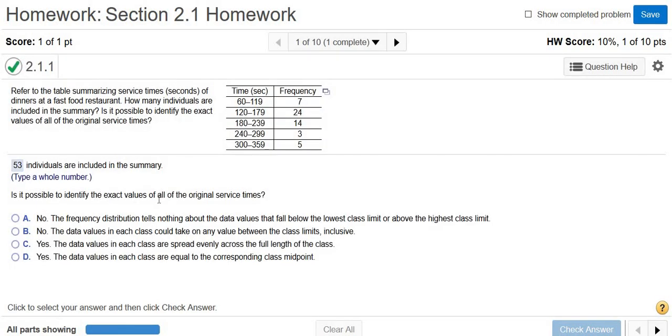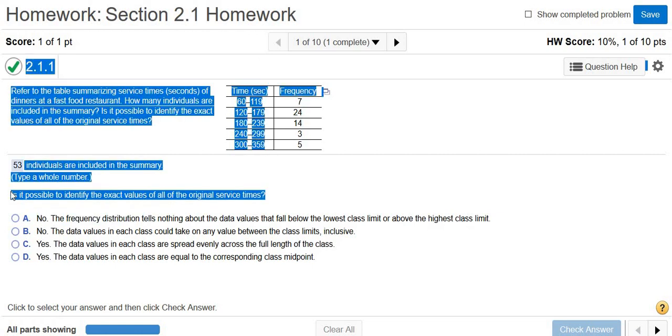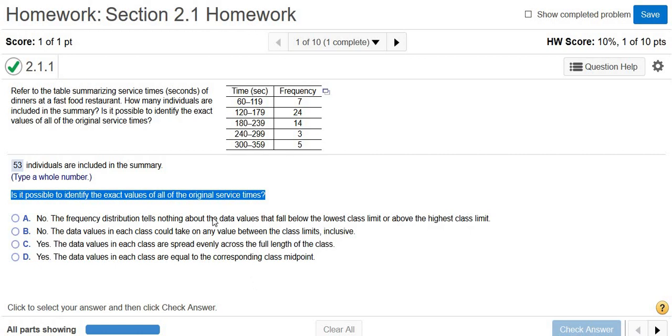Is it possible to identify the exact values of all of the original service times? So usually when you're doing these follow-up questions, the way I do it is I don't read the choices. First I try to answer it, and then I look at the choices. Because three of these choices are wrong. So if you just start reading all the choices, it could be confusing.